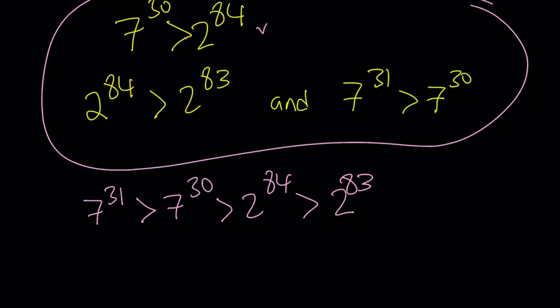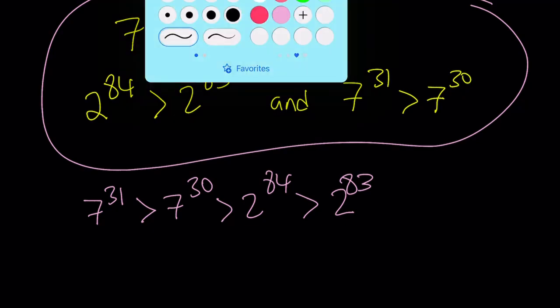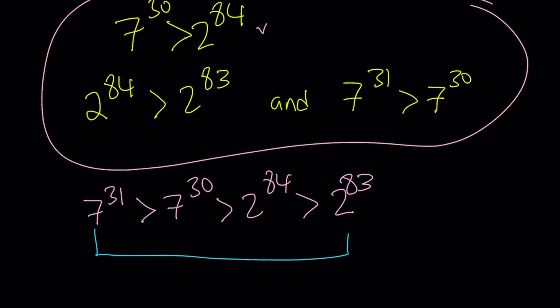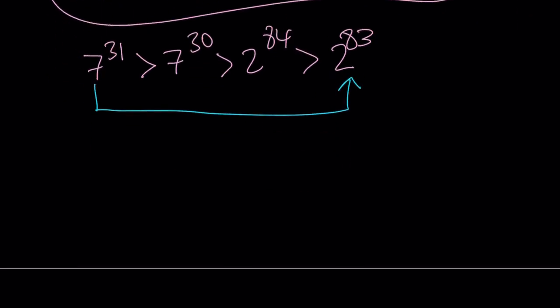And if you skip the two numbers in the middle, you notice that 7 to the power of 31 is greater than 2 to the power of 83. We are looking for the larger number. In this case, 7 to the power of 31 wins.